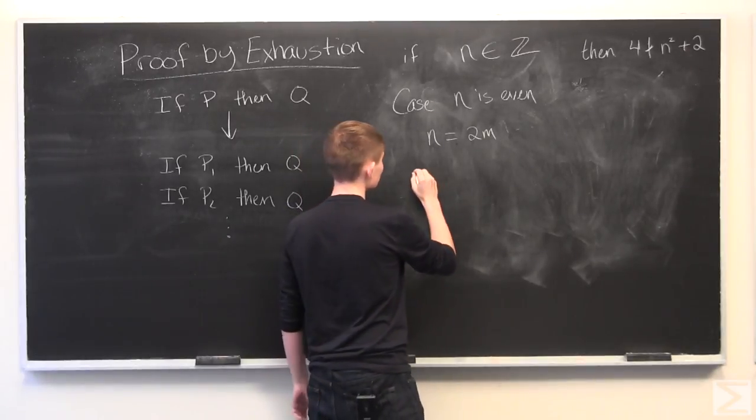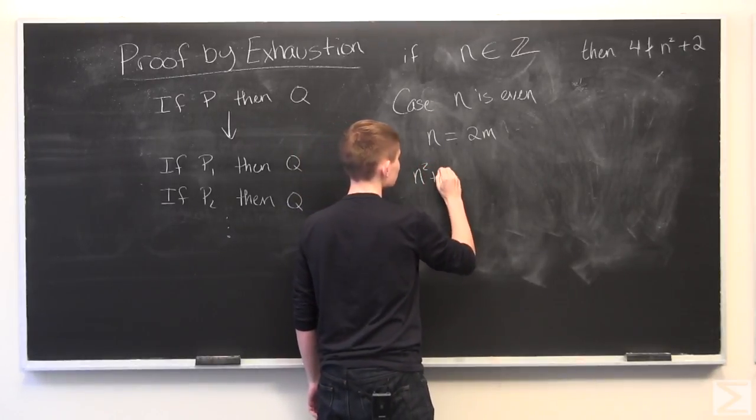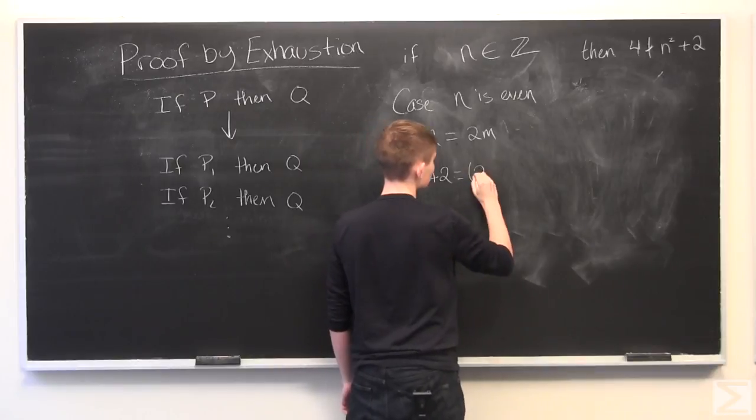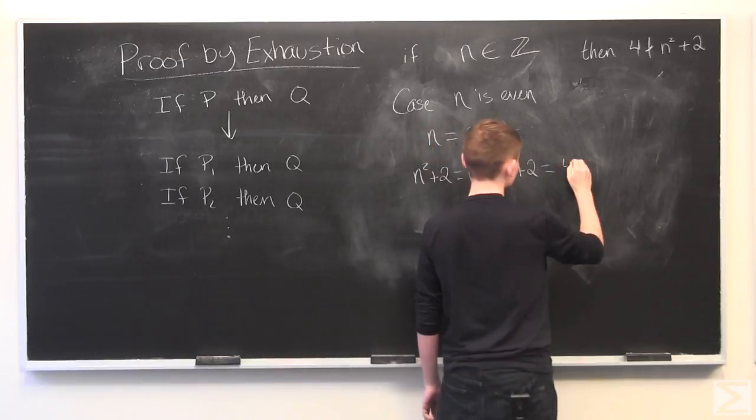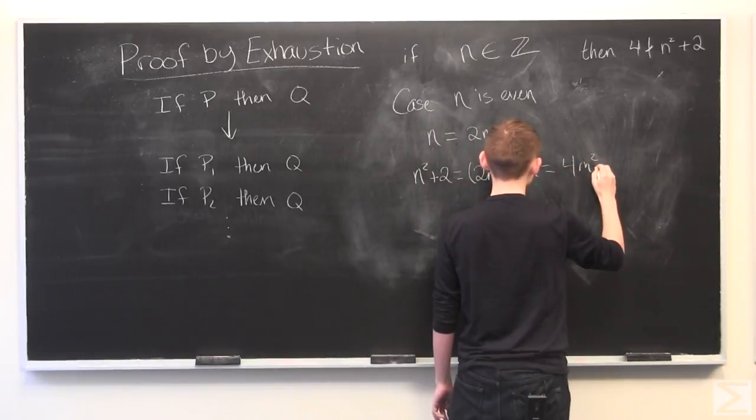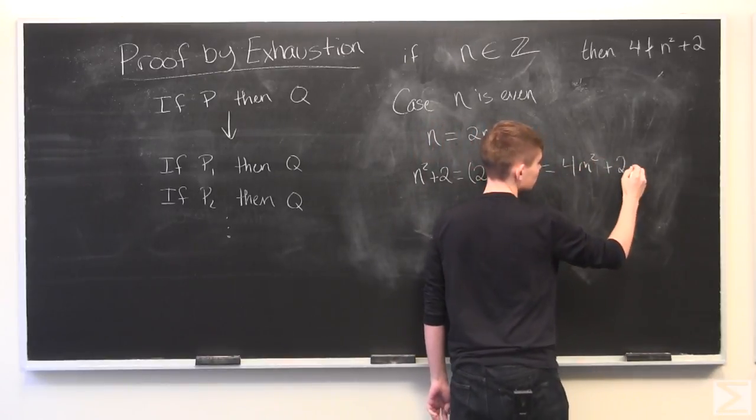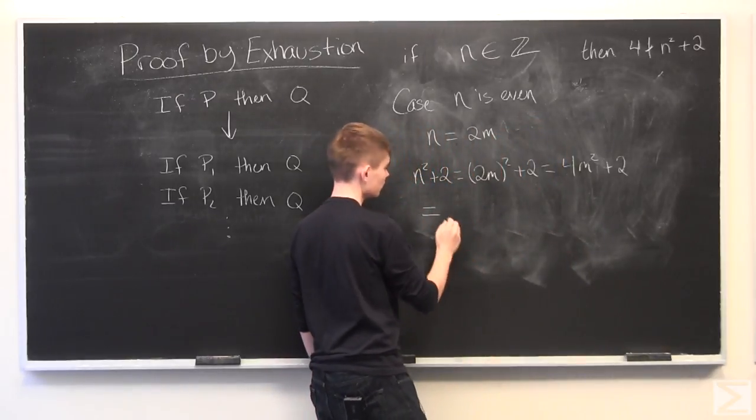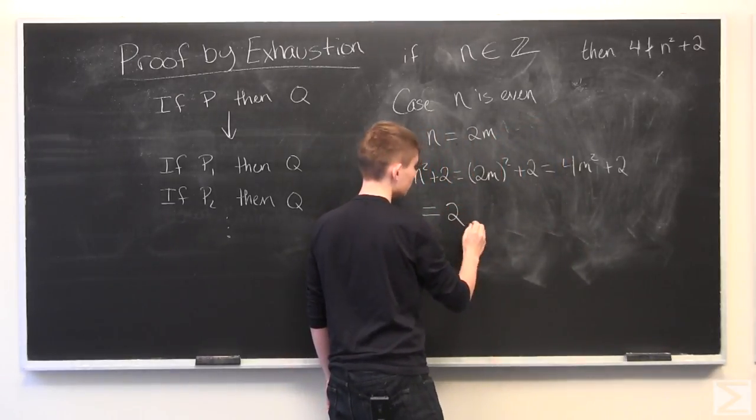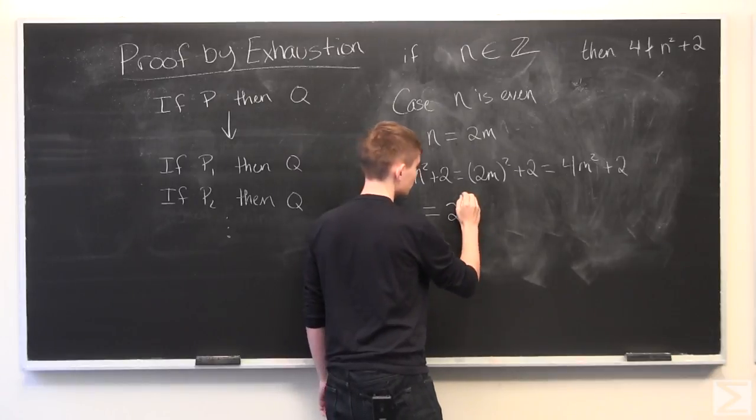And this means that N squared plus 2 is equal to 2M squared plus 2, which is 4M squared plus 2. And from here, we can factor out a 2 and get...